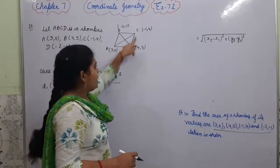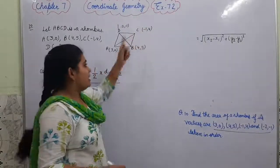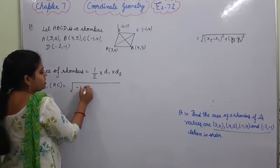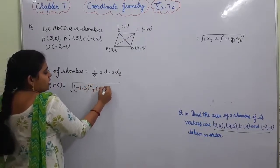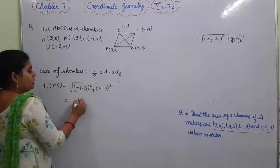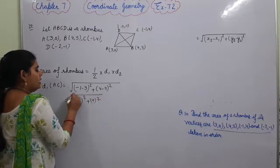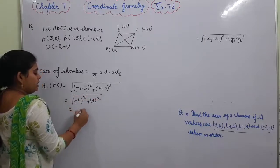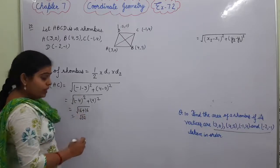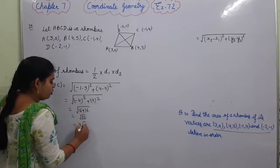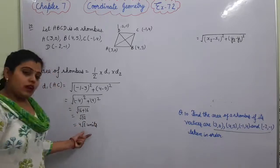By the distance formula, AC = √((−1−3)² + (4−0)²) = √((−4)² + 4²) = √(16 + 16) = √32 = 4√2 units.